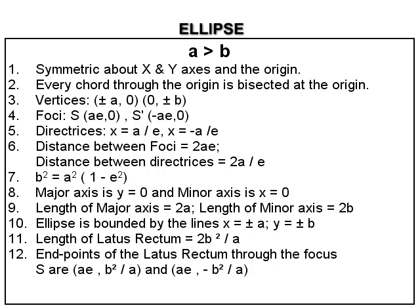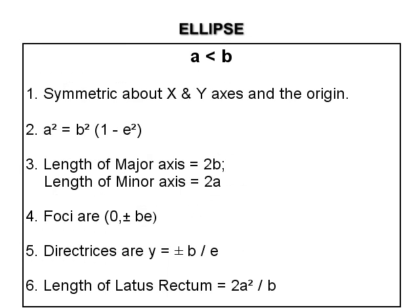For the second case where a less than b, the ellipse is again symmetric about both axes and therefore symmetric about the origin. Here a² equals b²(1 − e²), therefore e equals the square root of (b² − a²) upon b. The length of the major axis equals 2b and the length of the minor axis equals 2a. The foci are (0, ±be), the directrices are y equal to ±b upon e, and the length of the latus rectum equals 2a² upon b.